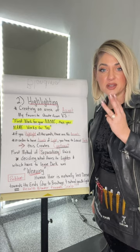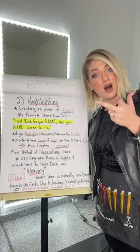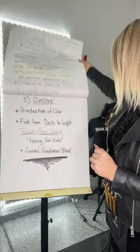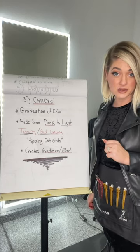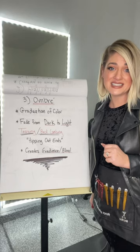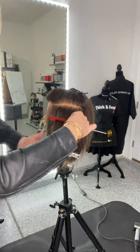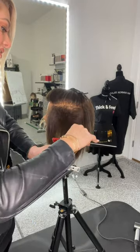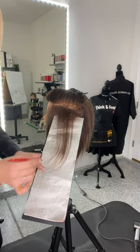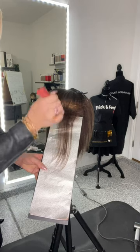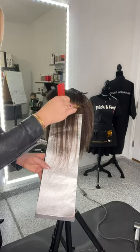Now we have our third term: ombre. The definition of ombre is a fade from dark to light, creating gradients or graduation of color. Typically this is done by teasing or back combing the hair. If we take a section of hair, back comb or tease it, and use a foil to lighten the ends, you get a diffusion that breaks up the line of demarcation to create a seamless blend or fade from dark to light.